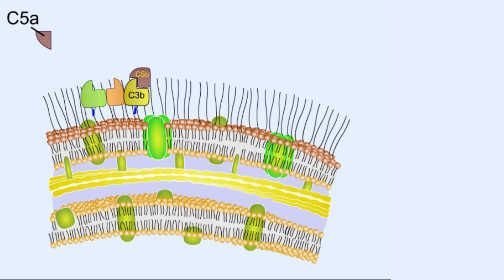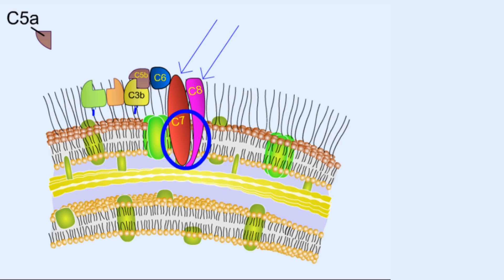Now the C5B keeps attached with the C3B complex there which is near to the cell membrane of the target pathogen. Then it will recruit many different types of complement proteins called C6, C7 and C8. Here C7 and C8 have a hydrophobic region which helps them to be embedded throughout the cell membrane of the target pathogen.